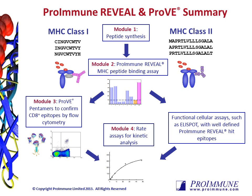Proimmune's Reveal and Prove platform is an epitope discovery service that is modular in design. Firstly, overlapping peptides from a protein or protein region of interest are synthesised. These peptides are then analysed in a physical MHC peptide binding assay against your MHC alleles of interest, selected from 20 MHC class 1 or 56 different MHC class 2 alleles. Each allele is run against a positive control binding peptide, and test peptides are measured as a percentage of binding compared to that positive control peptide.